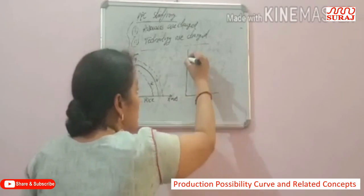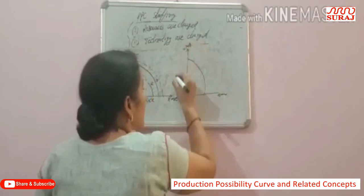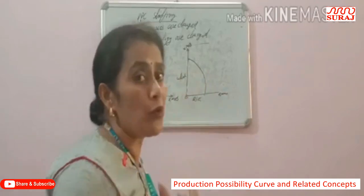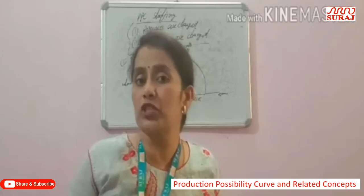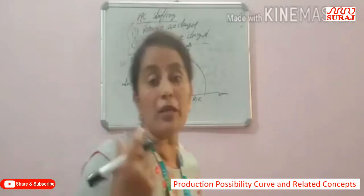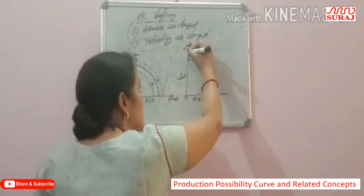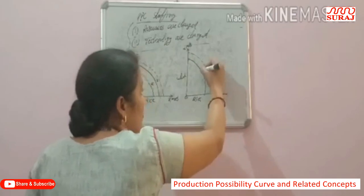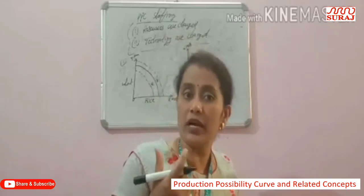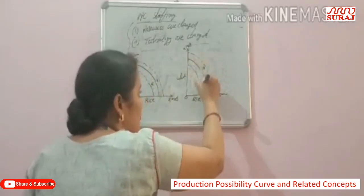In the case of technology: if there is an improvement in technology — if the producer uses innovative or modern technology — then production also increases, so the Production Possibility Curve shifts upward. When the producer uses outdated technology, there is a loss of output, so the Production Possibility Curve shifts downward.